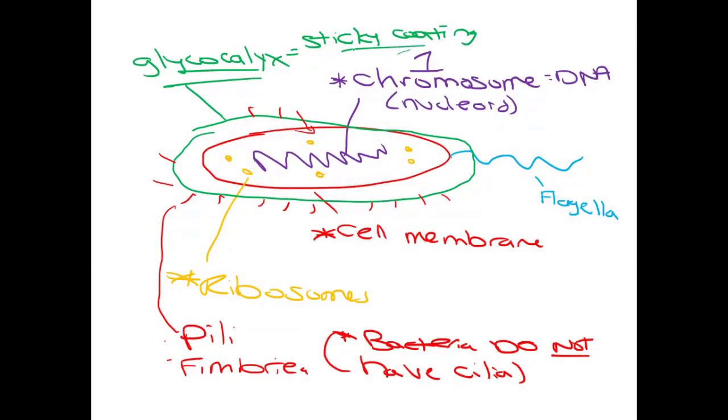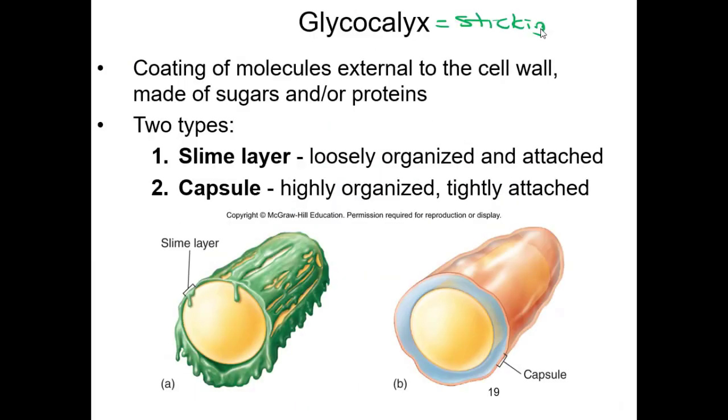The glycocalyx is a sticky coating used for cells to stick to each other and to surfaces. It's made up of sugar and protein. There's two types. The first one is called a slime layer, kind of like this goopy, loosely organized but very sticky material. The other type is called the capsule. Capsules are nice and smooth but pretty firm, yet still sticky.